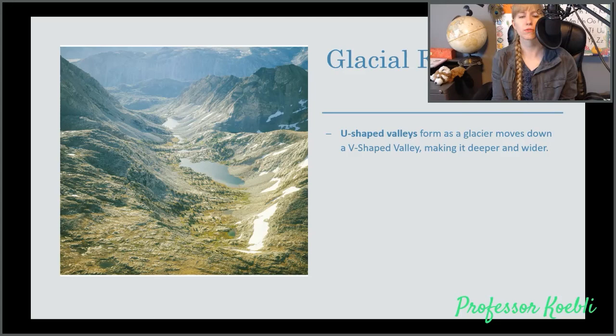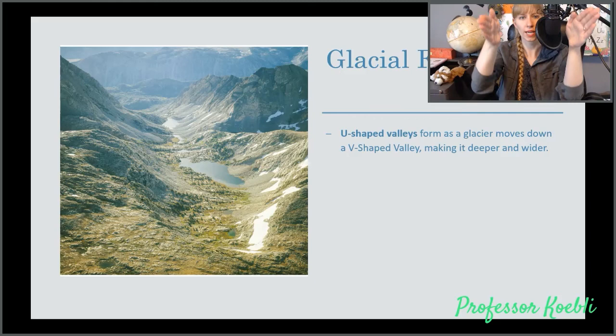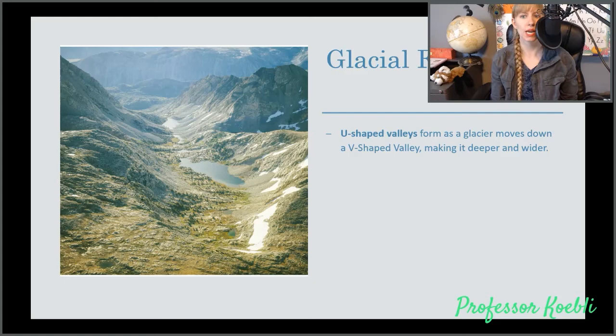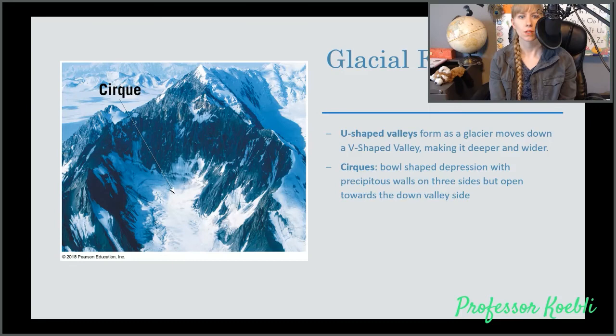There are a large number of glacial formations. The first one we're covering is U-shaped valleys, which like we see in the picture here. Basically, it starts out as a V-shaped valley. As the glacier moves through, it widens it, forming it into a U. The process is very slow, and they are able to gouge out some impressive scenery.